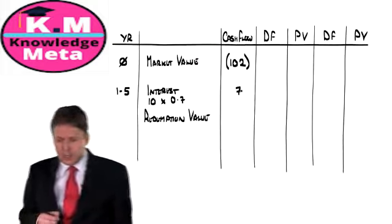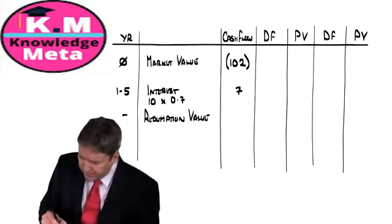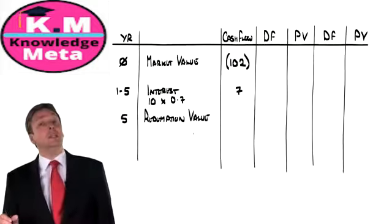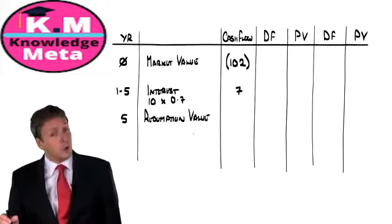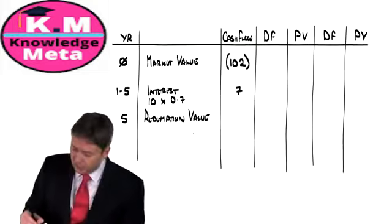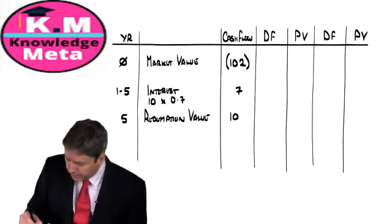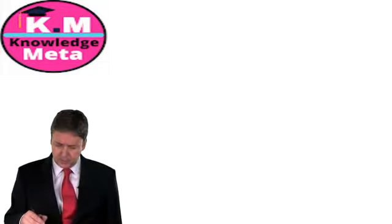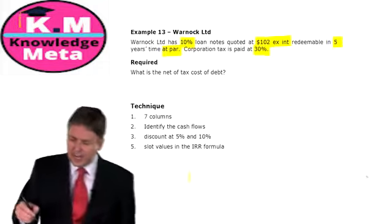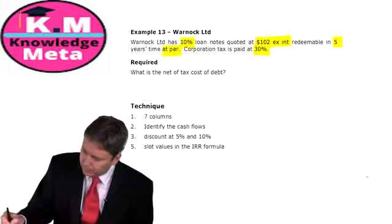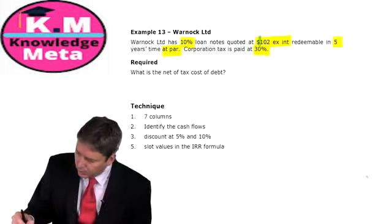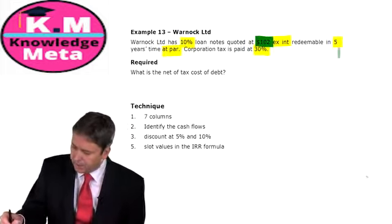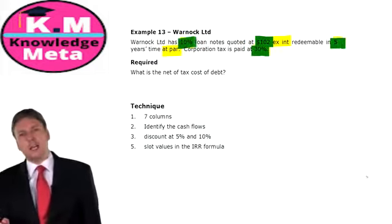Then we look at our redemption value — it's a single value in year five. We're told we redeem at par: £100. Just satisfy yourself that you're happy where these numbers come from: £102, five years, 30% tax, 10% coupon — it's all there.